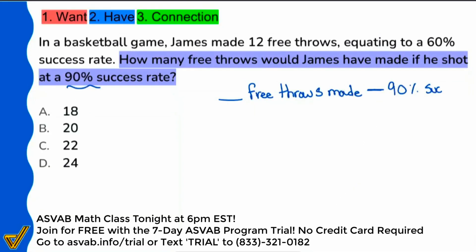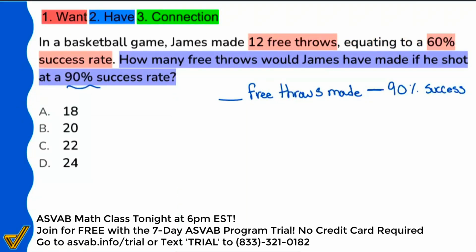What we know is that the number of free throws made is connected to a 90% success rate. And if we look at the information given, we may realize this question is a particular one, because it says in a basketball game James made 12 free throws, and that corresponds with — equates to — a 60% success rate. There's something peculiar going on: we have two ideas being compared in the same way — free throws made versus success rate — and that's happening twice.